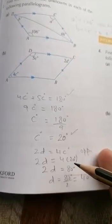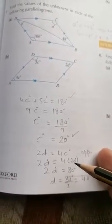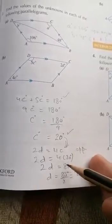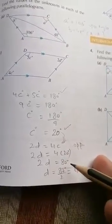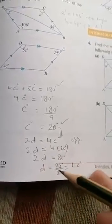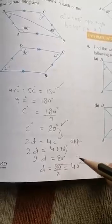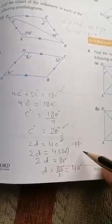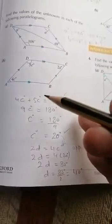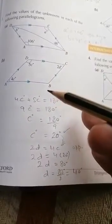In the next step, I substituted the value of C as 20 into the equation. So 4 times 20 gives 80 degrees. Then I shifted the 2 to the right side, and 80 divided by 2 equals 40 degrees. This is how we calculated the unknown angles in a parallelogram by applying angle properties.